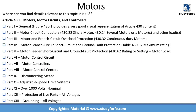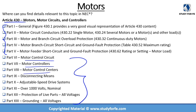For the remaining parts, I would recommend you go through them at least once. Parts 1 through 5 are more specific to motors. For the remaining parts: Part 6 deals with motor control circuits, Part 7 with motor controllers, Part 8 with MCCs, Part 9 with disconnecting means, followed by variable speed drives, motors over 1000 volts, protection of live parts for all voltages, and grounding of motors. These are good sections to go through at least once.